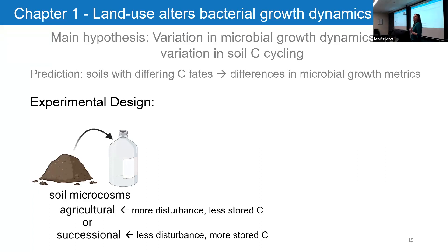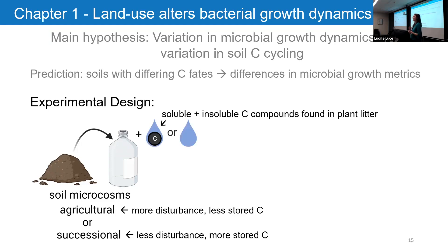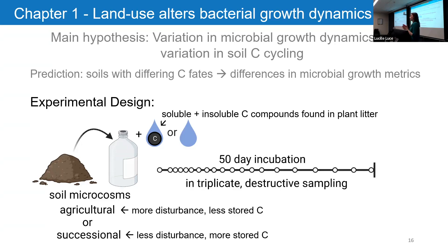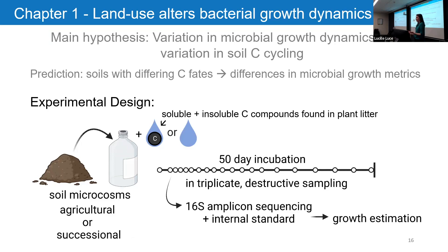I took soil from an agricultural plot, which has more disturbance and tends to have less carbon stored, and also from a successional plot that hadn't seen agriculture in a really long time — less disturbed and with more carbon stored in its soil. To the soil I added water and a cocktail of carbon compounds for the microbes to eat — a combination of soluble and insoluble carbon compounds commonly found in plant litter. I incubated these for 50 days and took samples in triplicate destructively over time. From there I did sequencing and growth estimations.